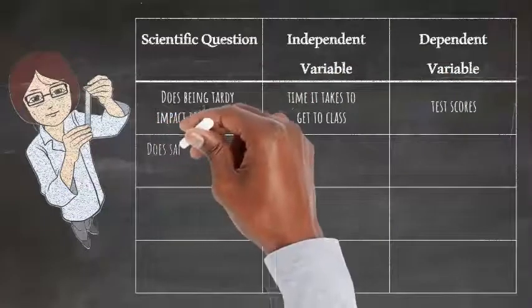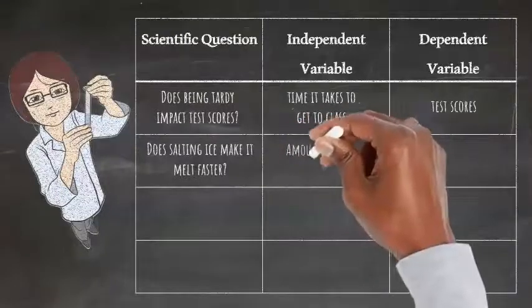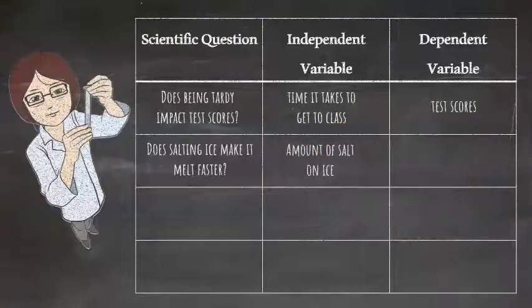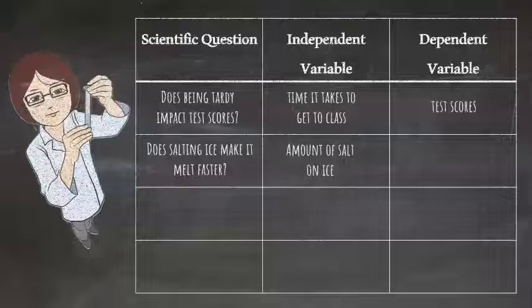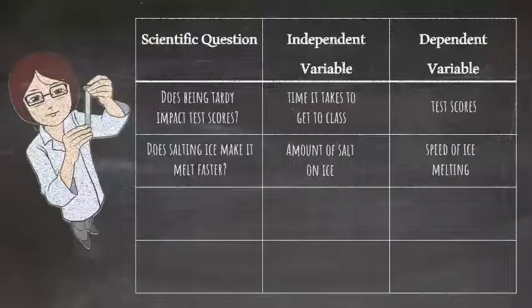What about the question, does salting ice make it melt faster? What we have control over is the amount of salt we put on the ice, and then that causes a change in the speed of the ice melting. In other words, the speed of the ice melting depends on the amount of salt on the ice.